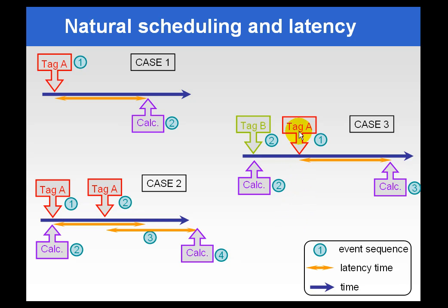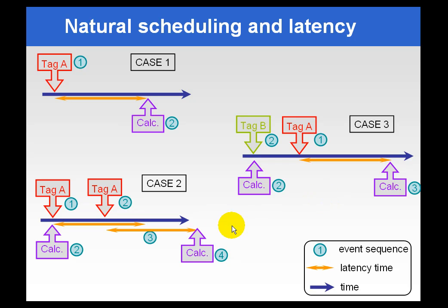If we have two trigger tags, tag A and tag B, and tag A comes in and triggers the calculation, but tag B triggers before tag A's trigger as far as timestamps, we will perform a calculation based on trigger B, and then tag A will continue to wait the Latency Period. So these are just some of the permutations.